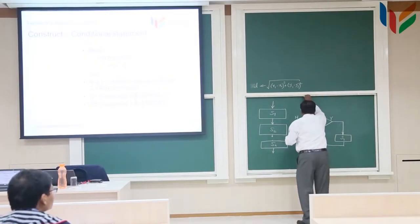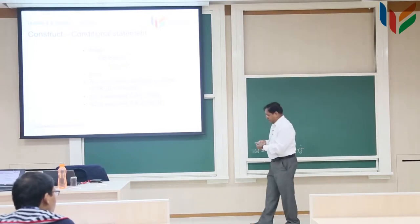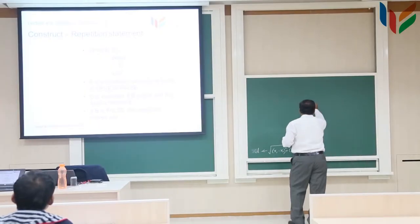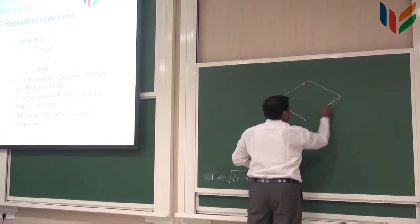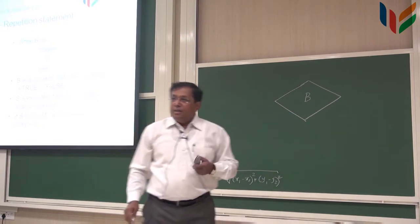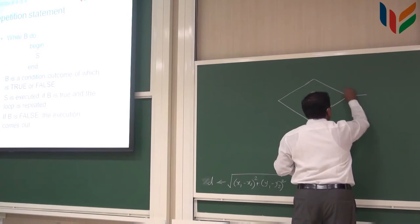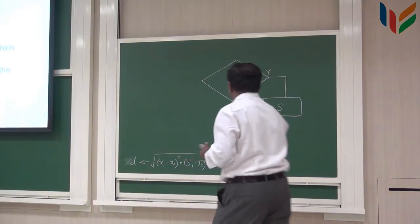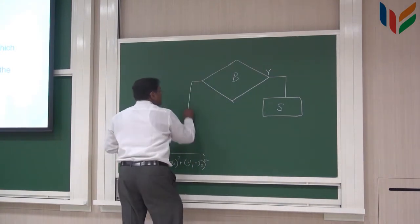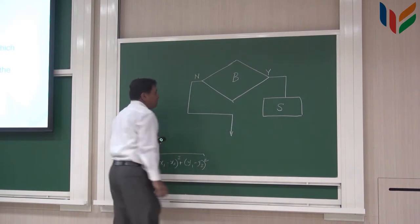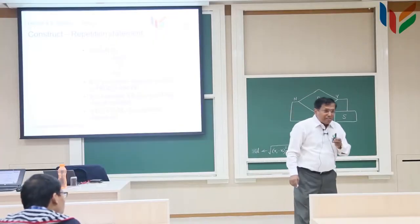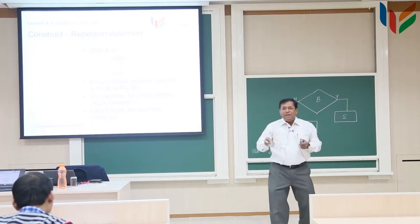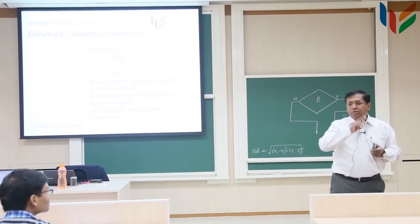The third one is very important, which is called as a while loop. What happens is that if I have a condition B, condition B will allow me to check whether it is S. If it is not true, then it comes out. But here there is a catch: if the condition is true, when I am processing this S, I am going to manipulate the status of B. And if B is true, then do S.